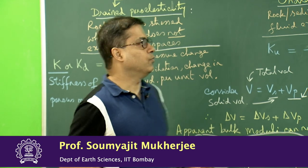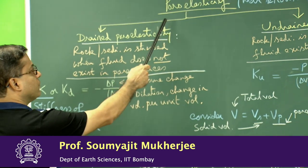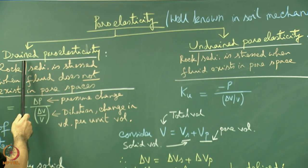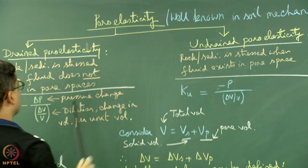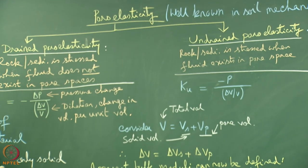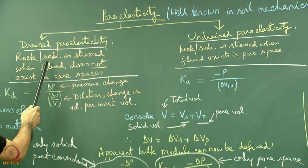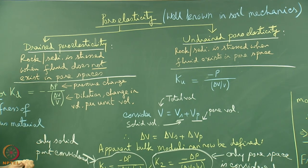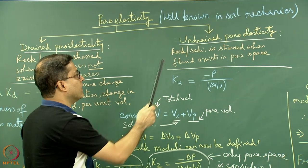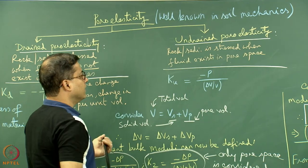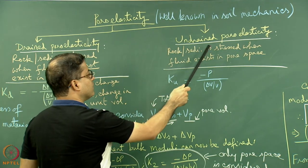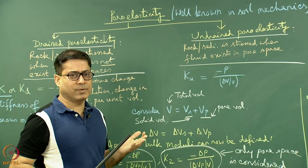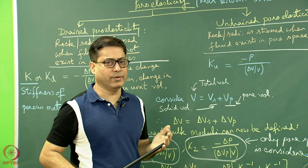We can divide poroelasticity, which is well known in soil mechanics, into drained poroelasticity and undrained poroelasticity. In drained poroelasticity, the rock or sediment is stressed when fluid does not exist in the pore space — it is a dry condition. In undrained poroelasticity, the rock or sediment is stressed when fluid exists in the pore space, so pore space must be present and there has to be fluid.